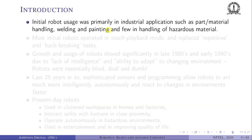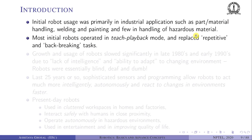The initial use of robots was primarily in industrial applications such as part handling, welding, painting, and handling of hazardous materials. For example, the initial die-cast pieces handled at the General Motors plant were very hot and difficult for humans to handle. Most initial robots operated in 'teach-playback' mode — you teach the robot a set of tasks by recording the motion of its joints, then take it to the factory and play it back repeatedly.